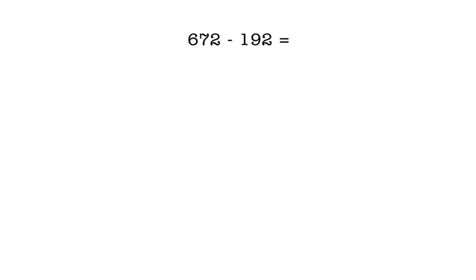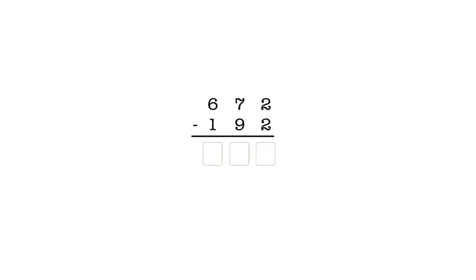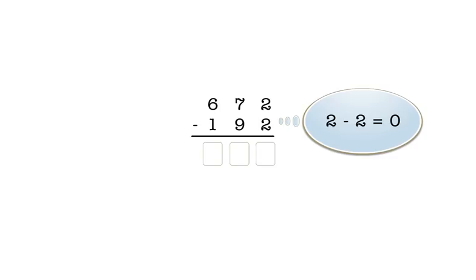Here's our last example: 672 minus 192. First, we rewrite the problem in columns, making sure we line up the numbers in each place like this. In the ones place, we have two minus two, which is zero. So we enter zero in the answer box for the ones column.